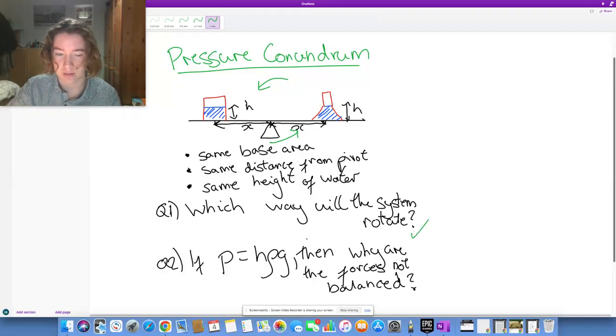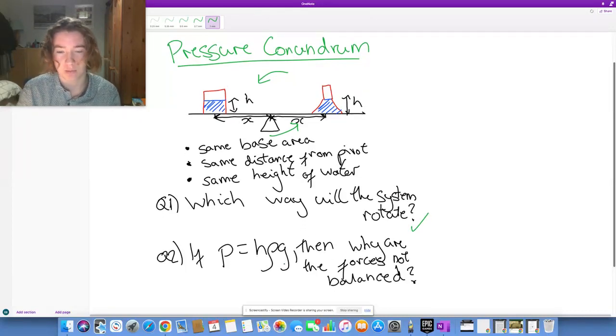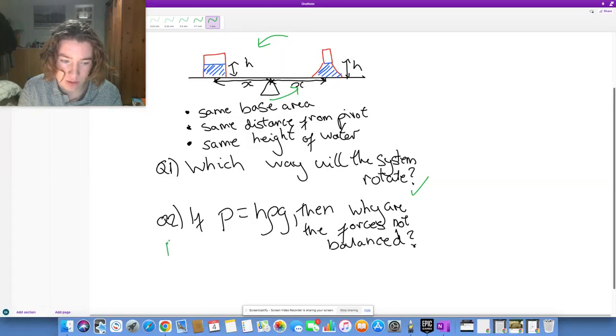But when you start thinking about it, it gets a bit more tricky, because if pressure equals h rho g, that is the density of the liquid times the height of the column of the liquid times the gravitational field strength, if we combine this with the fact that pressure is force over area,